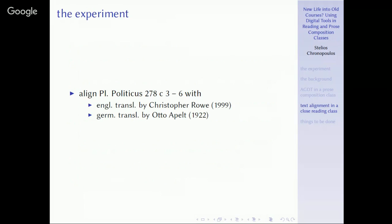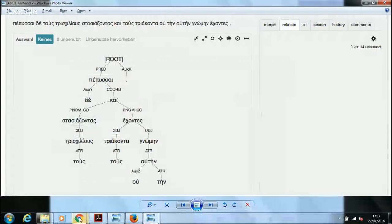We took two translations, an English one, perhaps the best translation of the Politicus that we have, from Christopher Rowe from 1999, and the German one, by Otto Appelt from 1922. There's also a difference in chronology here. And I will present you some results of that.